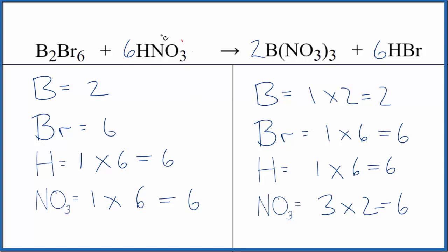So by counting this nitrate as just one thing, since it appears on both sides, that really helps with these double displacement reactions. This is Dr. B with the balanced equation for B2Br6 plus HNO3. Thanks for watching.